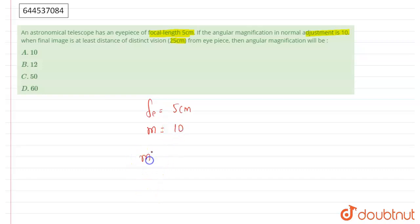As we know, the angular magnification when the image is formed at least distance of distinct vision is equal to M times (1 plus Fe upon capital D).